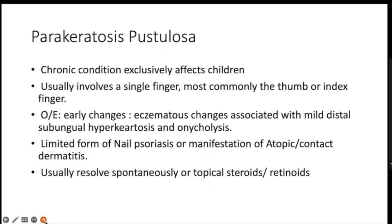Parakeratosis pustulosa is another entity exclusive to children. It is a chronic disease in which usually only a single finger — most commonly the thumb or index finger — is involved. Early changes are in the form of eczematous changes associated with mild distal subungual hyperkeratosis and onycholysis.